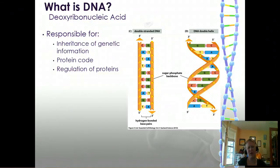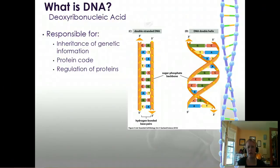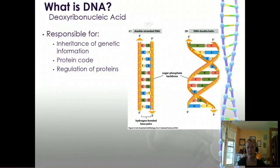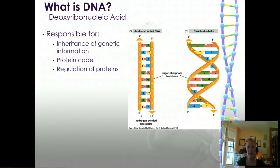Beyond protein coding, there's also a lot of regulation that goes into the DNA code. It tells us when and where and how much protein we should be making and how things should be activated. This is what leads to cellular differentiation, and we'll talk about that later in this unit.